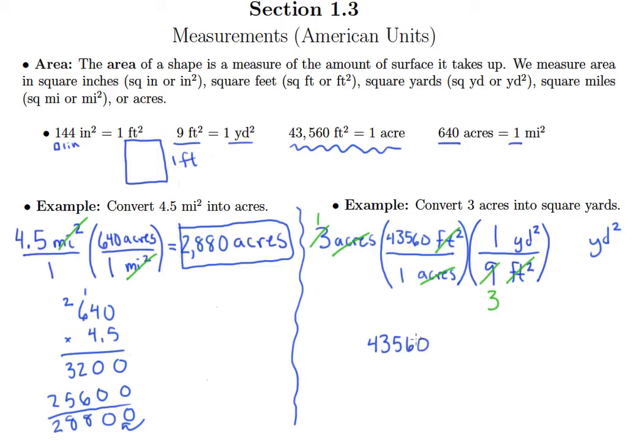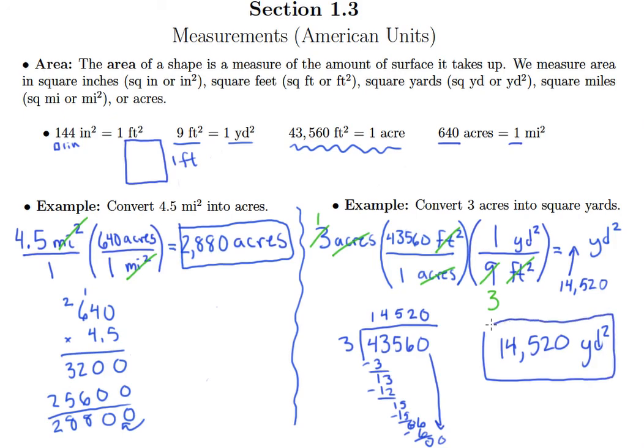So perform that division. So 3 goes into 4 once, 3 goes into 13 four times, 3 goes into 15 five times. Oops, sorry. 3 goes into 6 twice. And I've about run out of room, but that's okay because now 3 goes into 0 zero times. And so we're done. And so looks like I didn't quite leave myself enough room. So I need to put 14,520 square yards. Let me rewrite that real quick. So 14,520 square yards is equivalent to 3 acres.